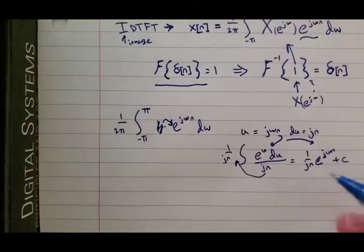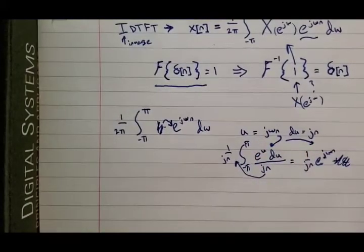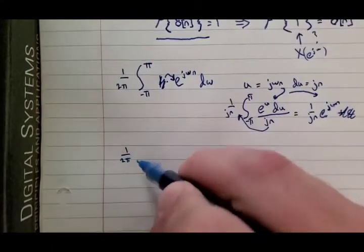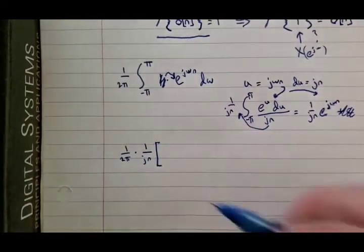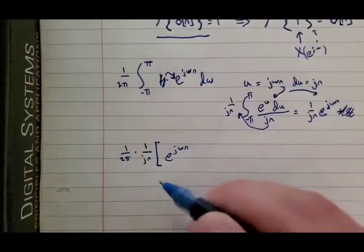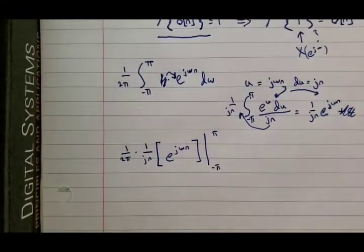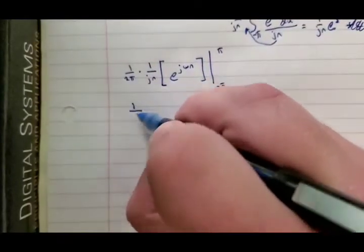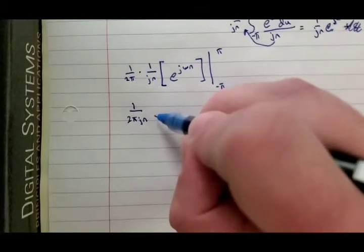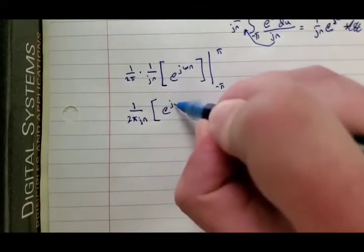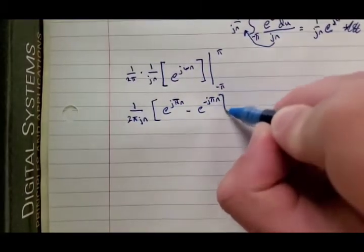And so what we have now is I'm going to ignore the constant because they're going to cancel out in the evaluation of the integral from negative π to π. So we have 1 divided by 2π times 1 over jn, and we have e^(jωn) evaluated from negative π to π. So let's expand that, and we're going to put these two together. So we get 1 over 2πjn times e^(jπn) minus e^(-jπn).